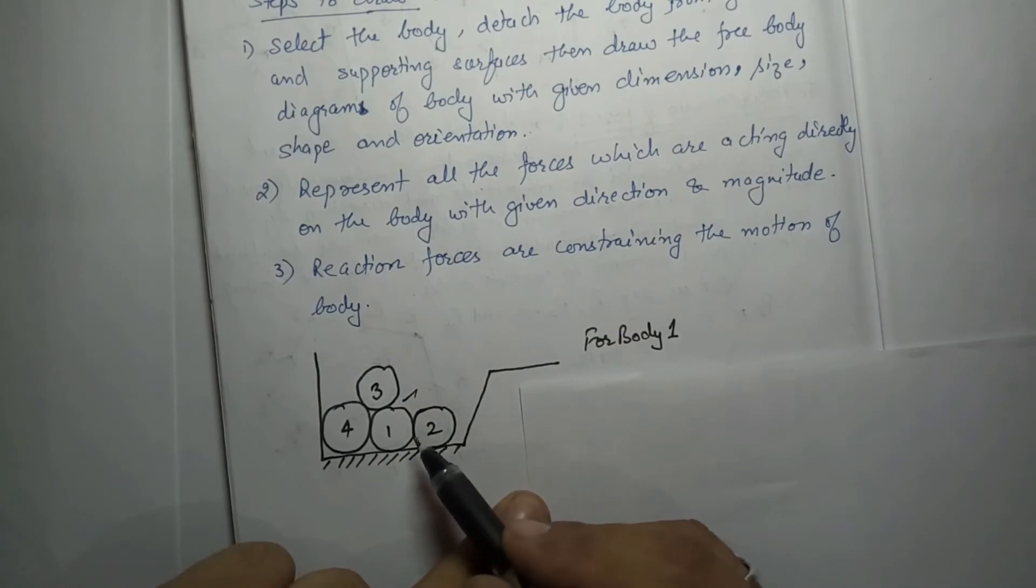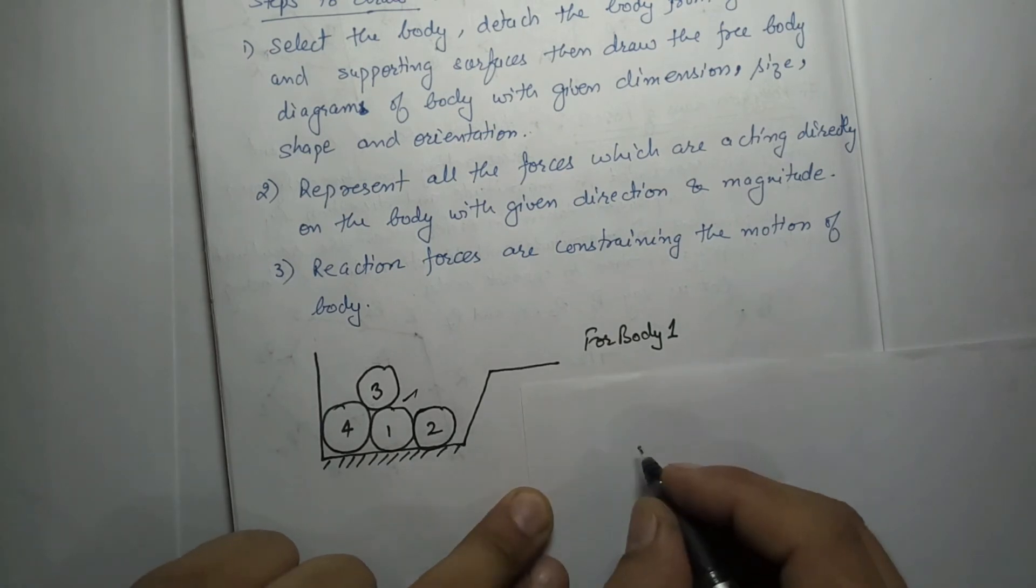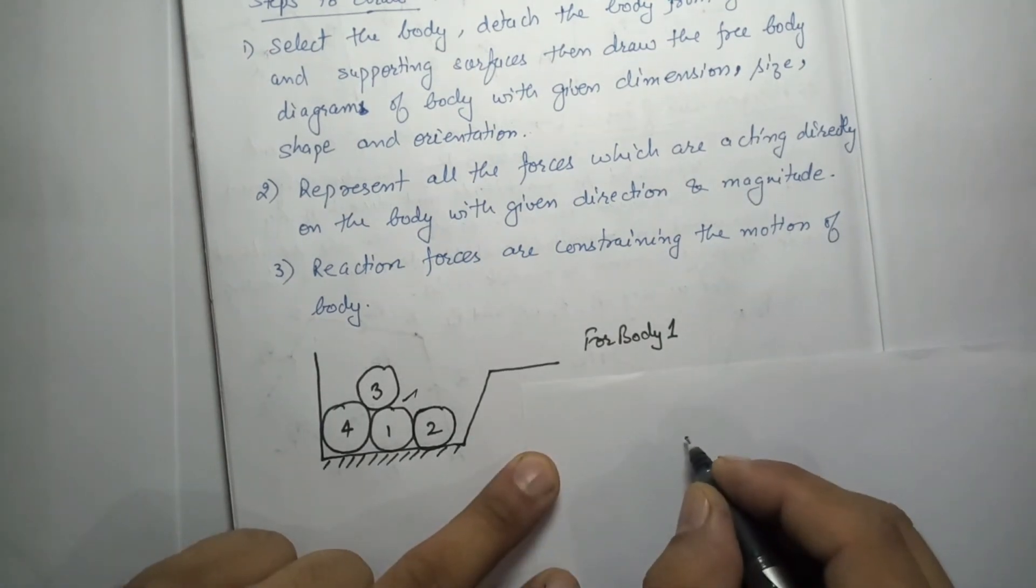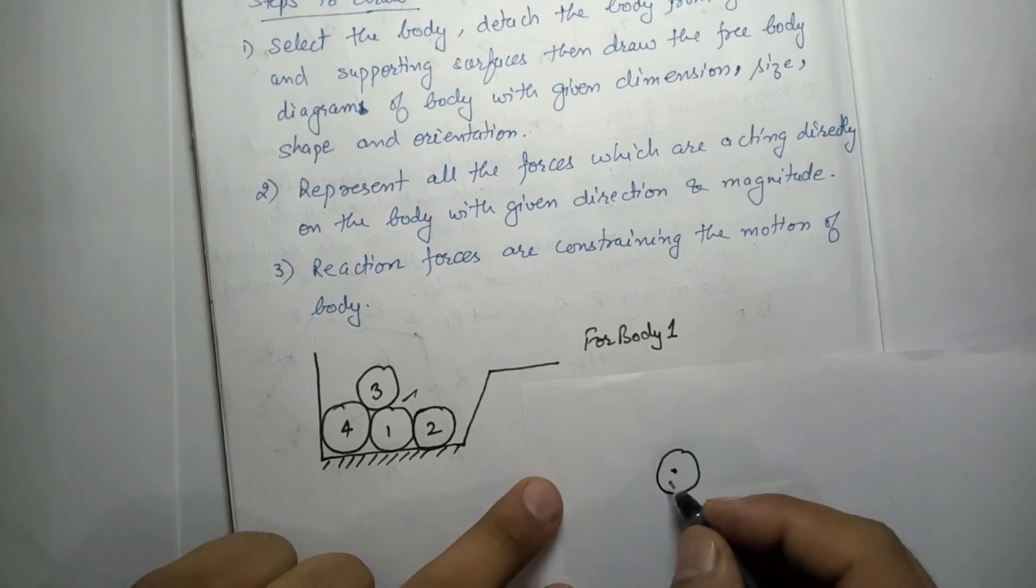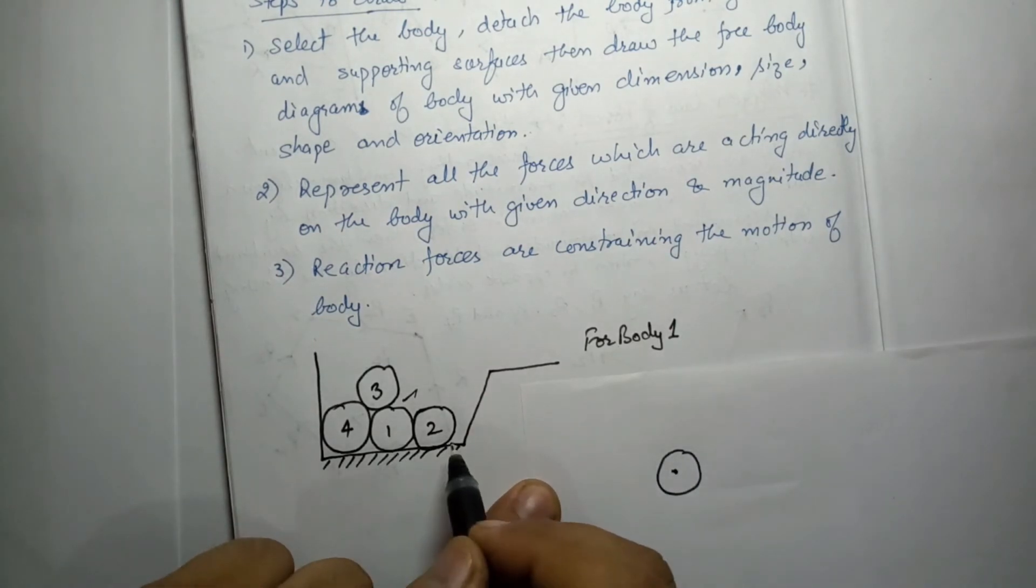The first step says we have to detach body one from all the other supporting surfaces and we have to draw the body of the same size, dimension, and orientation. So we draw, let's say this is body one. Now we have to see what are the various forces acting on this body due to the other surfaces.